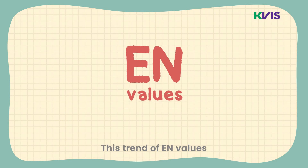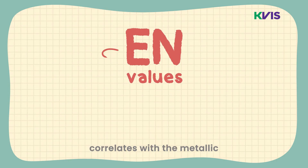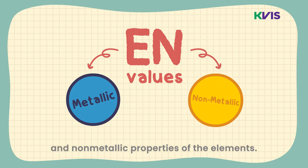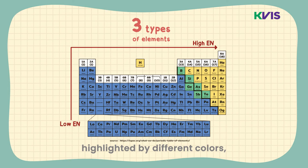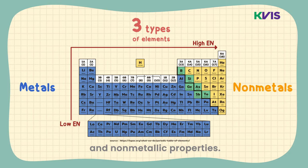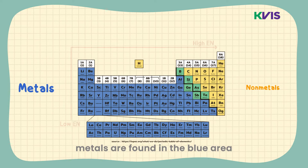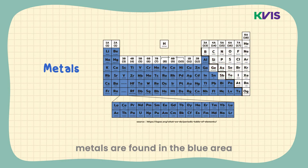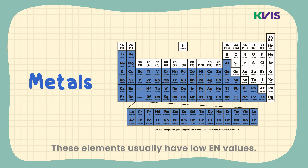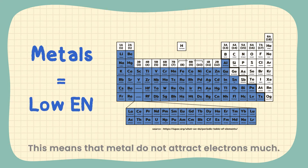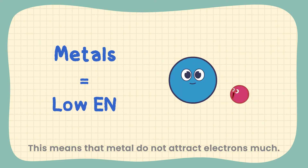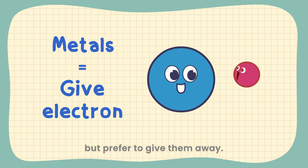This trend of EN values correlates with the metallic and non-metallic properties of the elements. There are three types of elements highlighted by different colors, each with different metallic and non-metallic properties. Firstly, metals are found in the blue area of the periodic table. These elements usually have low EN values, meaning that metals do not attract electrons much but prefer to give them away.